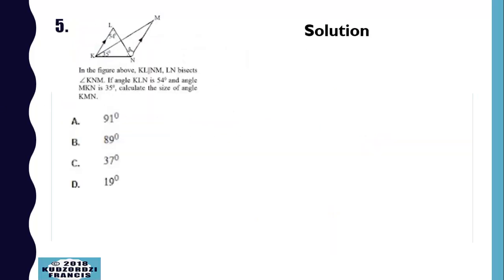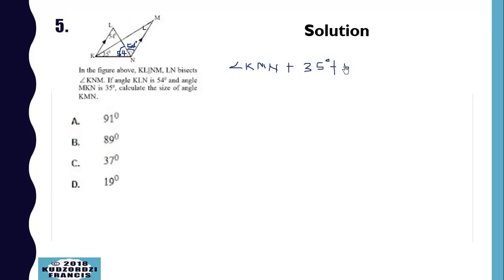This angle is parallel to this, so these are equal — alternate angles are equal. We are told that these two angles are also equal, so this is also 54 degrees. Now we add all these in the triangle KMN: angle KMN plus 35 plus 54 plus another 54 is equal to 180.